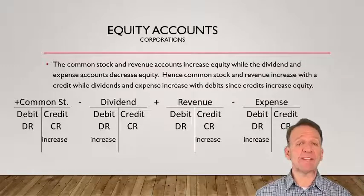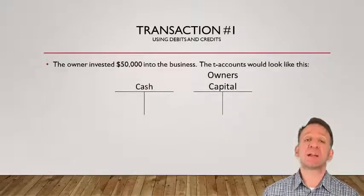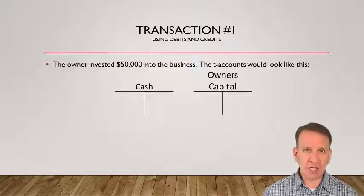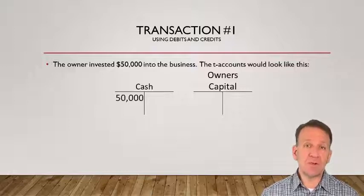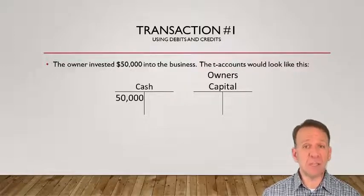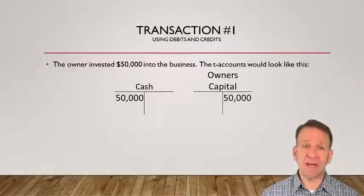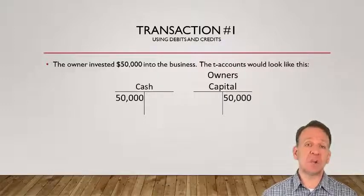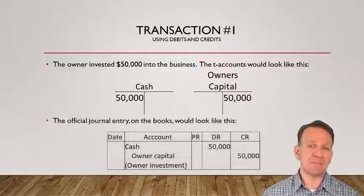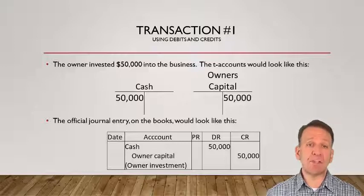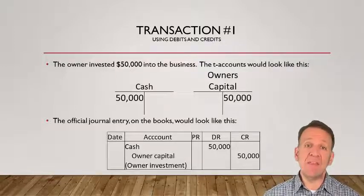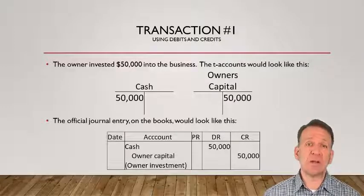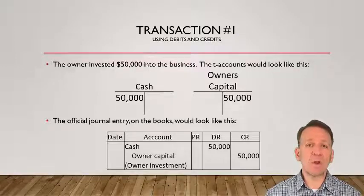Now that we've seen how debits and credits affect the accounting equation, let's take a look at some transactions from previous videos. Transaction number one: the owner invested $50,000 in the business. From a T-account perspective, cash would increase $50,000, so you can see in the T-account that $50,000 is on the debit side. Owner's capital also increases, but it increases with a credit balance, so you see the $50,000 on the credit side of the T-account. The official way of recording this transaction is through a journal entry. Cash is debited $50,000, and owner's capital is slightly indented with the $50,000 credit in the credit column. Debits are always recorded first in journal entries, then the credits. Owner's capital is for a sole proprietorship — if this had been a corporation, we would have credited common stock instead.